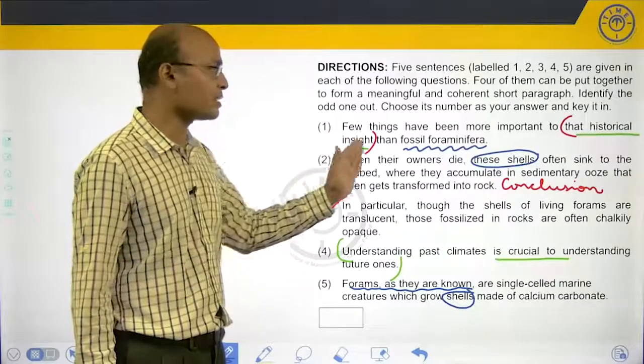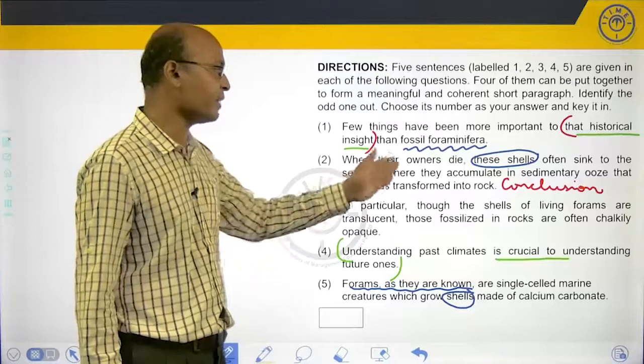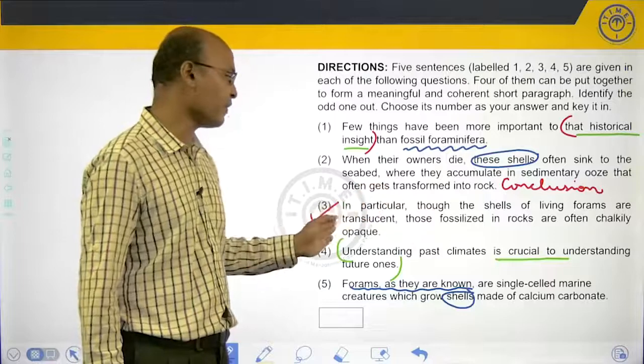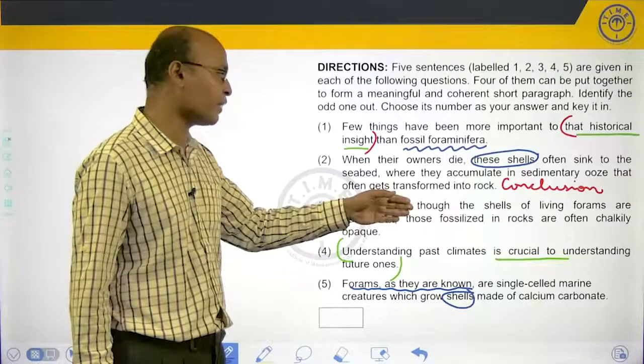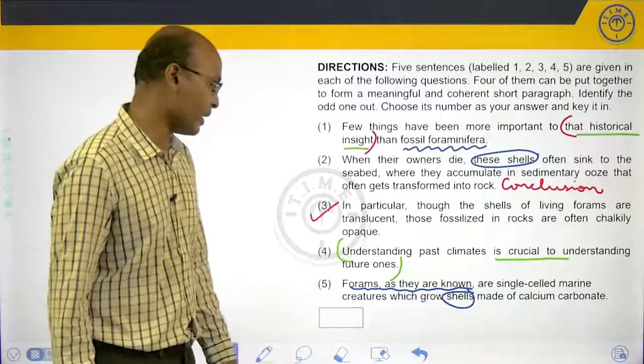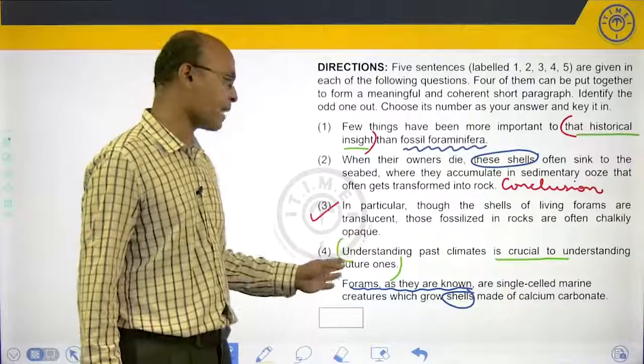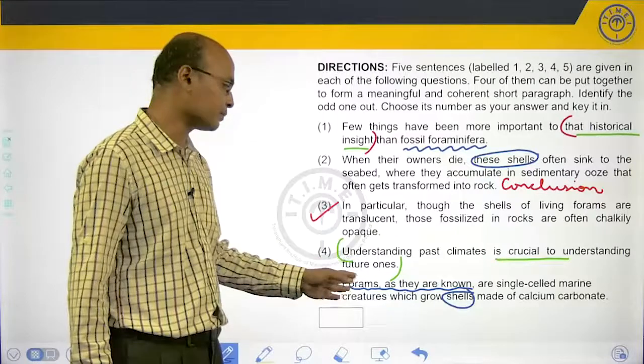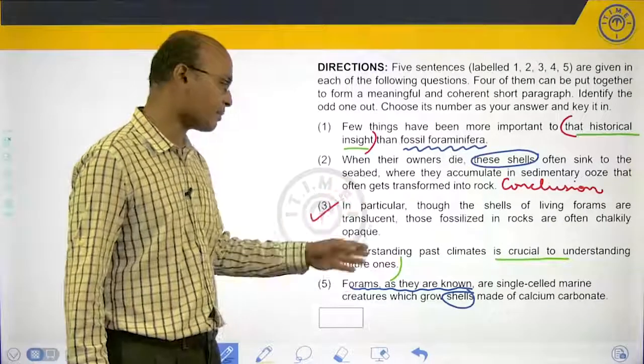Second one: when their owners die these shells sink to the seabed where they accumulate. Third: in particular, though the shells of living forums are translucent, those fossilized in rocks are often opaque. Fourth: understanding past climates is crucial to understanding future ones. Five: forums, as they are known, are single cell creatures.